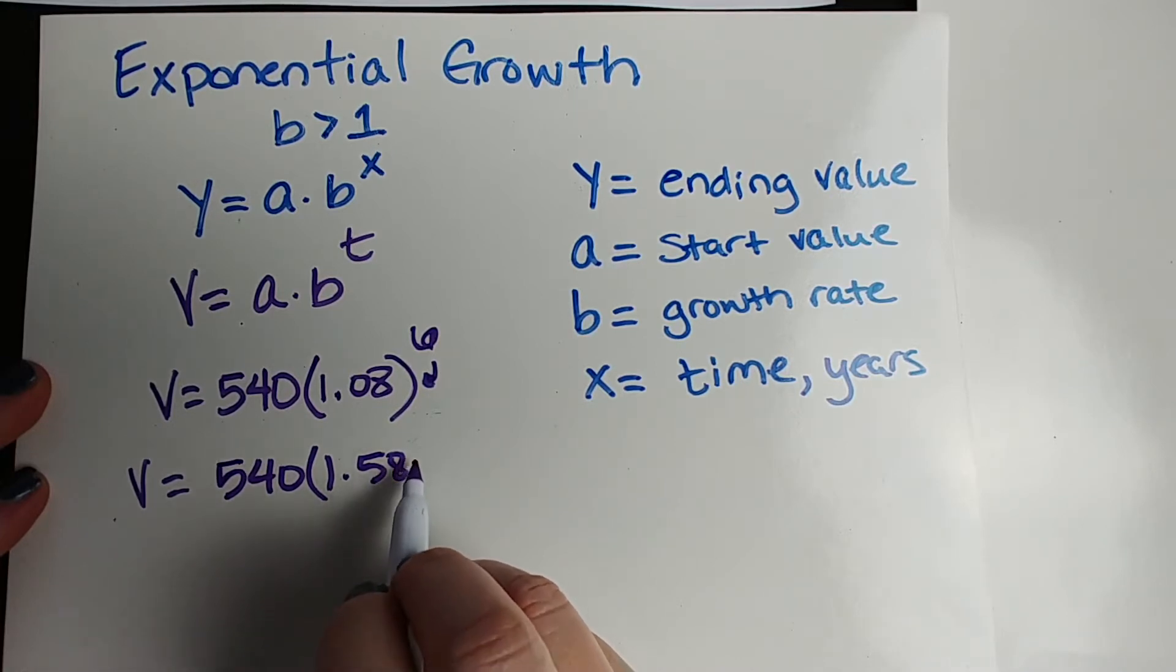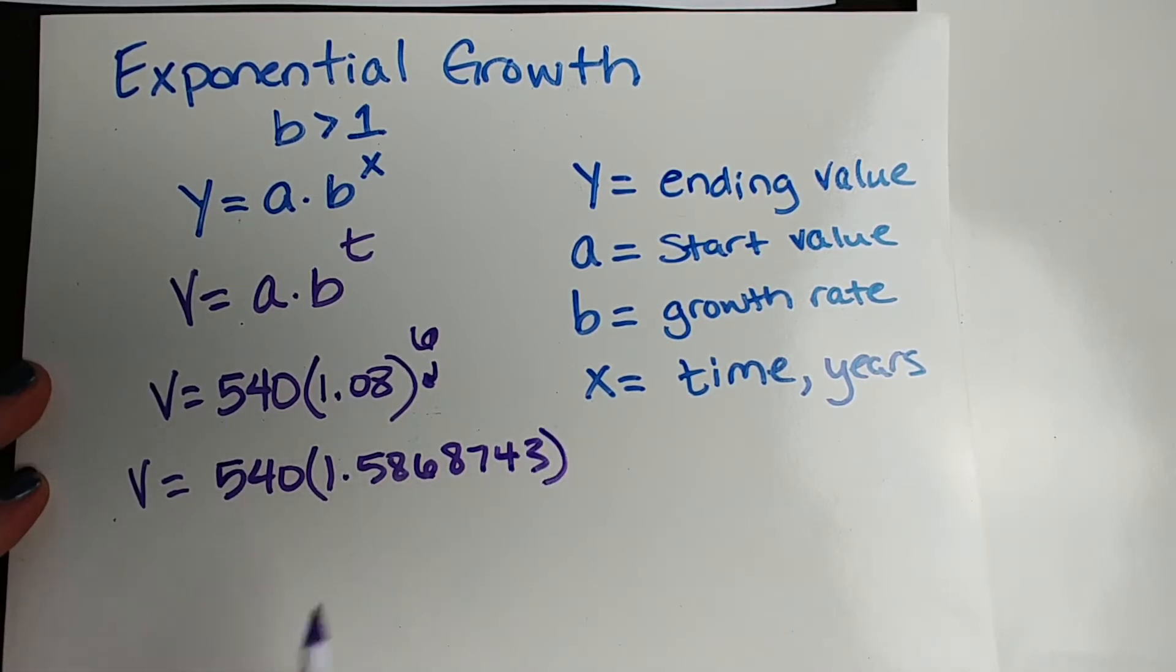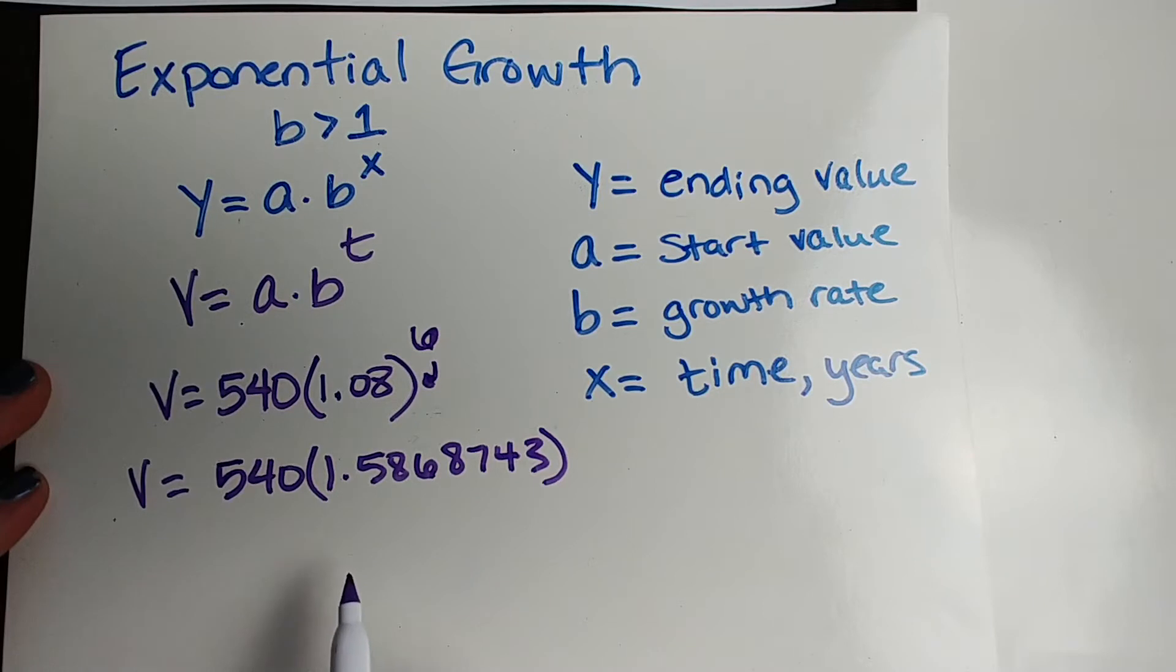We get 540 times 1.586743. You don't normally write all of this out. When you get this in your calculator, you're going to get 1.08 to the 6th power, you're just going to go ahead and hit your multiplication button, 540, and let it do the multiplication for you.